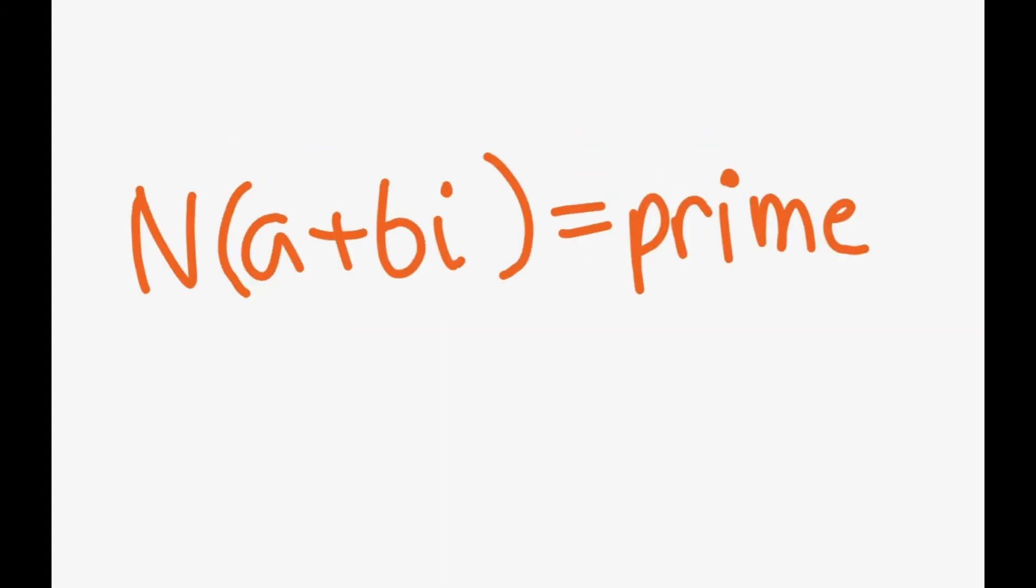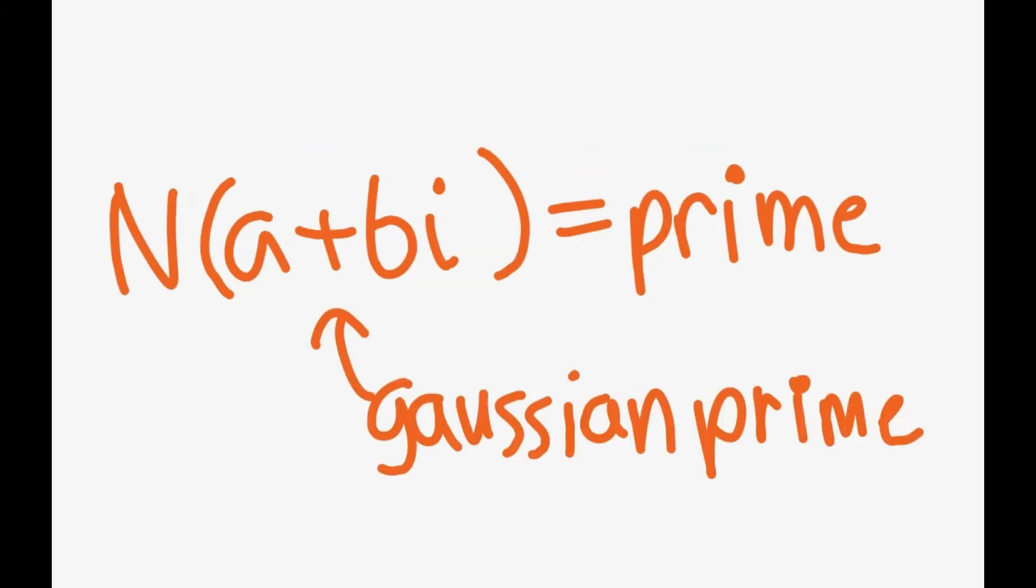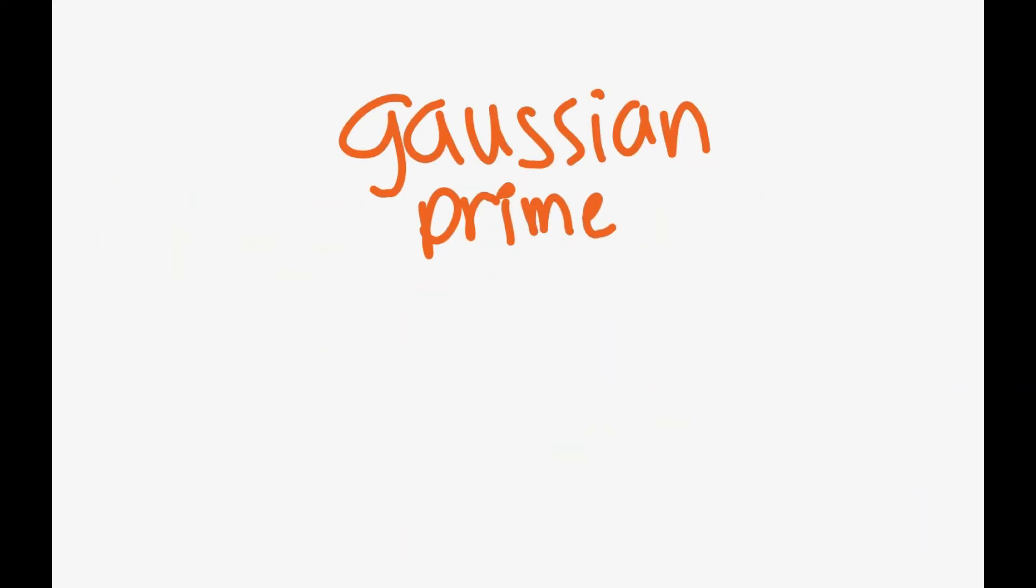To generalize this, all Gaussian integers whose norm is a prime are Gaussian primes. In other words, a Gaussian prime cannot be factored into more Gaussian integers except a unit in itself.